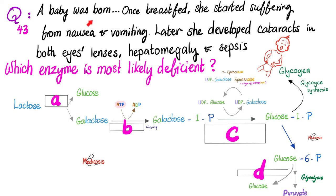A baby was born. Once breastfed, she started suffering from nausea and vomiting. Later, she developed cataracts in both eye lenses, as well as hepatomegaly — big liver — and gram-negative bacterial sepsis. The question is: which of the following enzymes — A, B, C, or D — is most likely to be deficient in this baby? Please pause.